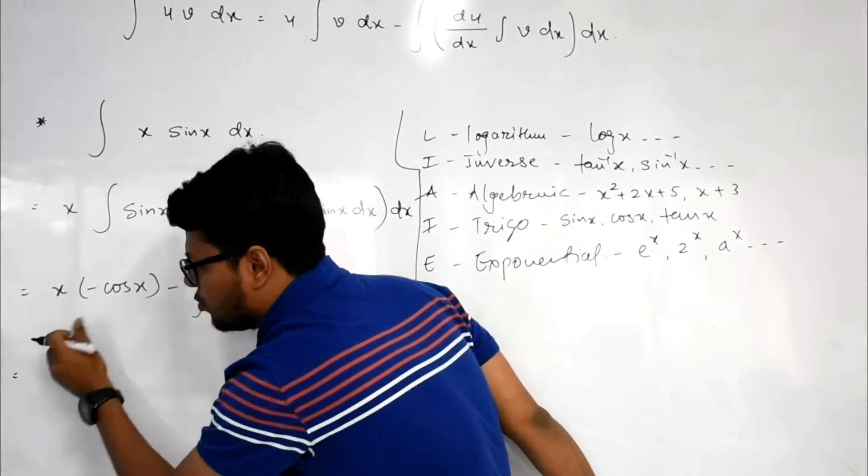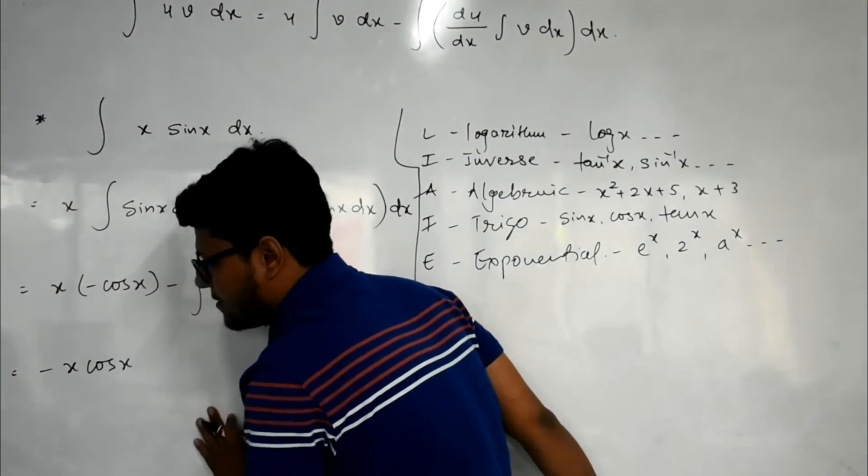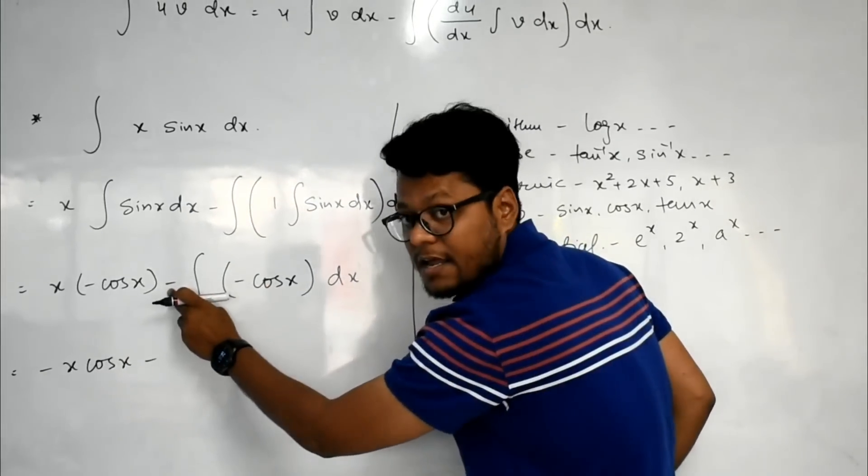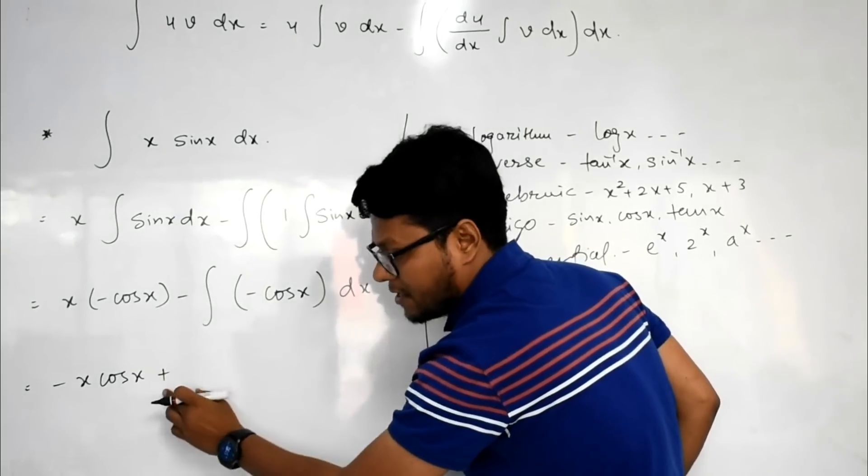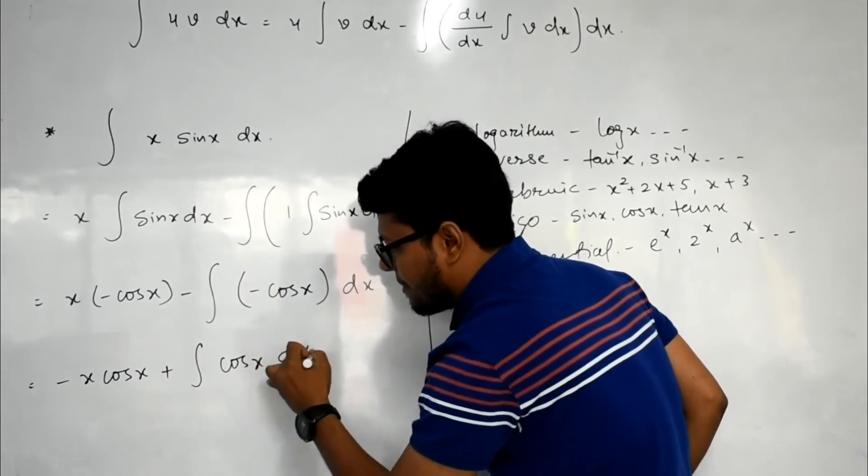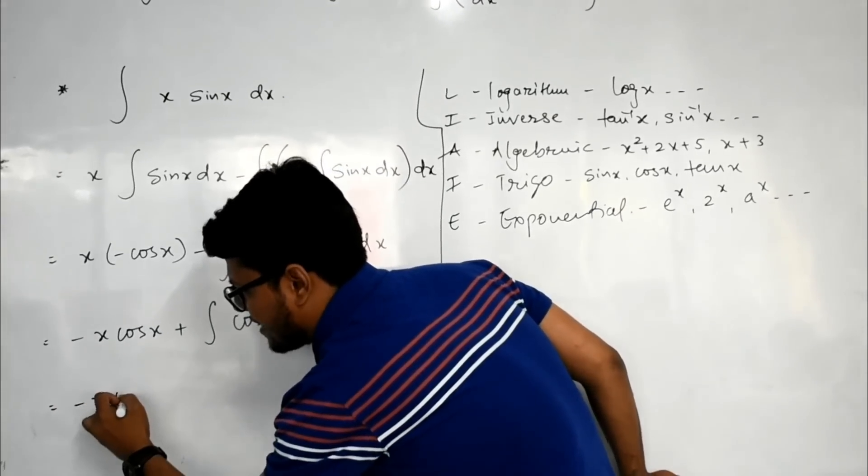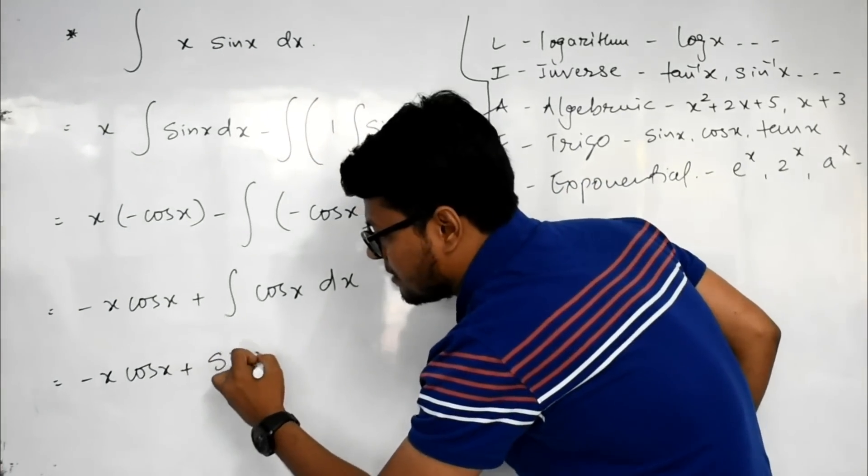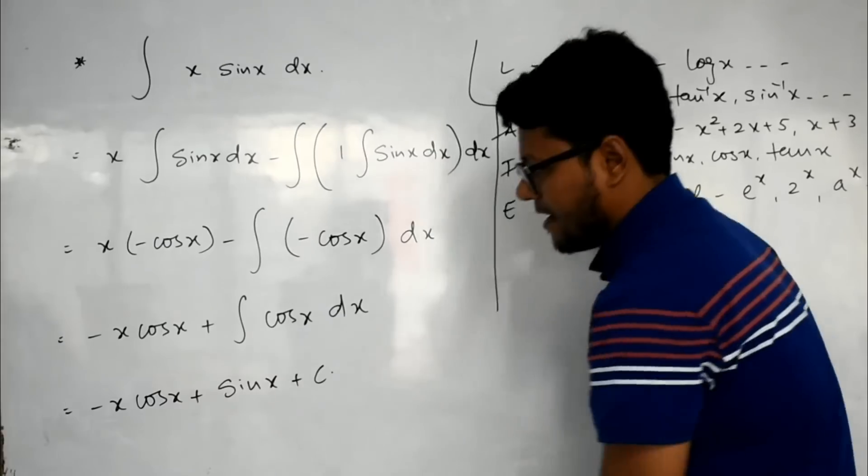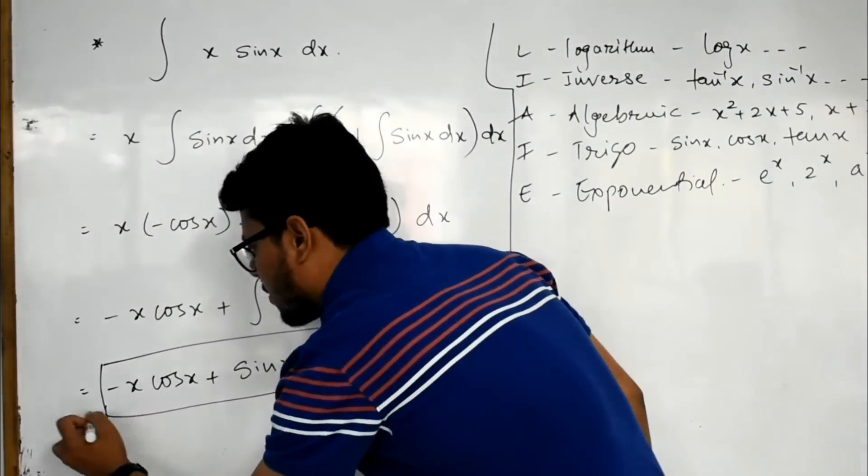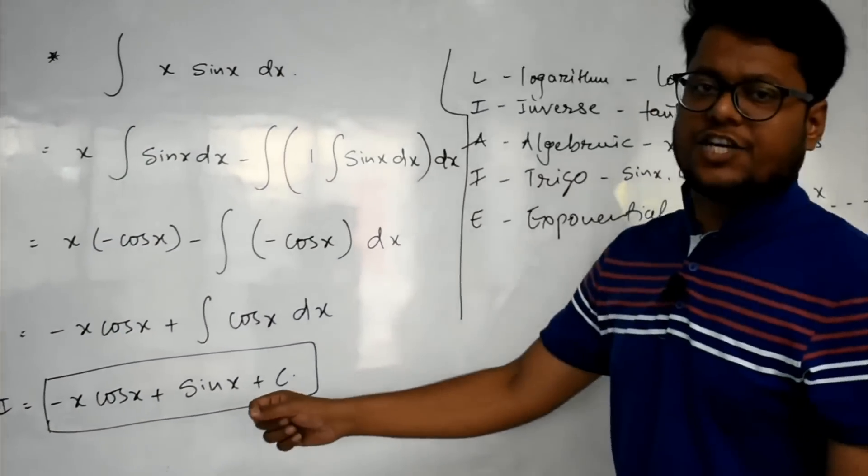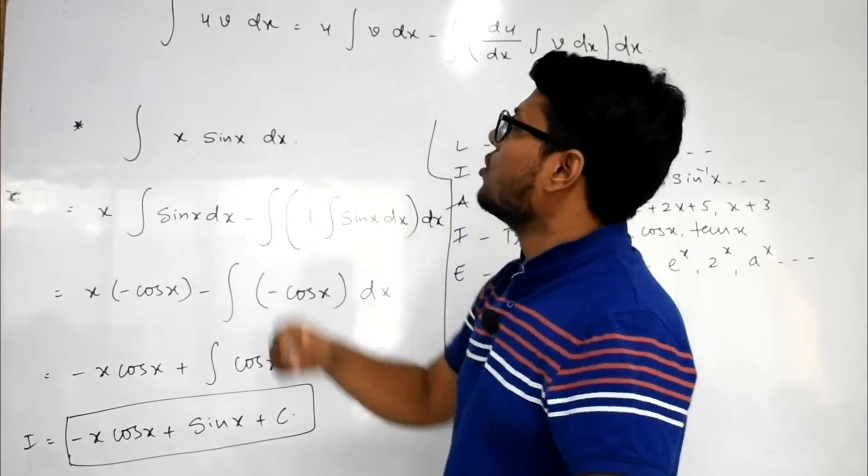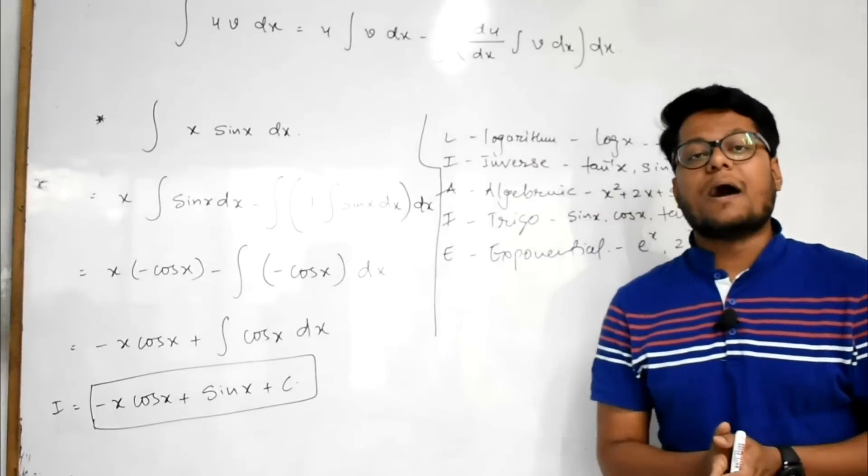Now the multiplication of these two terms becomes minus x cos x. If we consider this minus at the front side, so it will minus minus become plus. And the integration is remaining. Now the last step is minus x cos x plus. What is the integration of cos x? That is sin x, and plus c is there. So this is the method for finding simple integration of two terms which have a relation in multiplication. This is all about the integration by parts method.